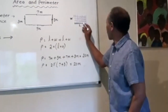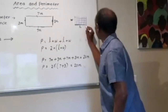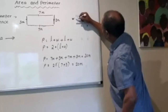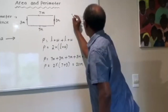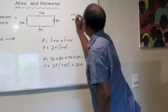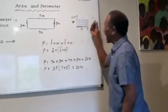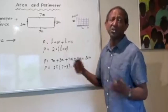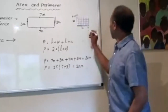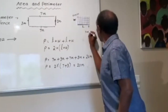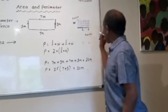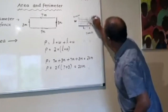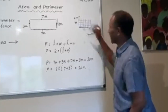And the width is four units — because we don't know if this is centimeters, inches, meters, or kilometers, so we call it units when we don't know. So seven units for the length and four units for the width.